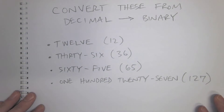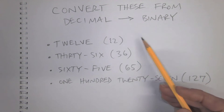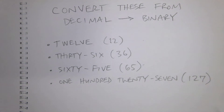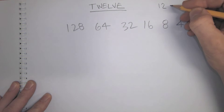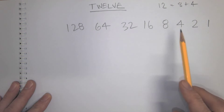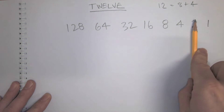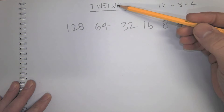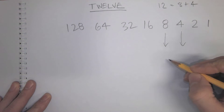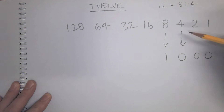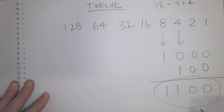Let's convert some numbers from decimal to binary. We'll do 12, then 36, then 65, then 127. For decimal 12: I know that 12 equals 8 plus 4. In binary, if you know that the positions represent powers of two, and you can express the number as a sum of those powers, then you can set those bit positions to 1. So 8 plus 4 means we set the 8-position and the 4-position to 1.